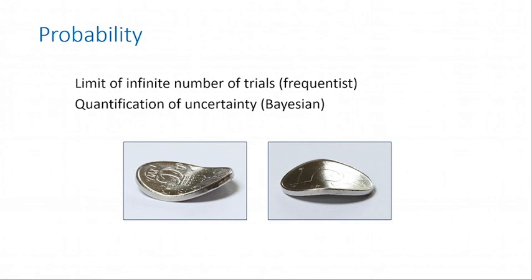An example: a bent coin where the physics is such that 60% of the time it lands concave side up and 40% concave side down. But one side is heads and one is tails, and we don't know which is which. If asked to bet on whether it lands heads or tails, rationally you'll bet 0.5 — because if you bet anything else, I can make money out of you. It doesn't mean you believe the frequency of heads will be 50%; it means you don't know which side is which. It's an expression of ignorance.